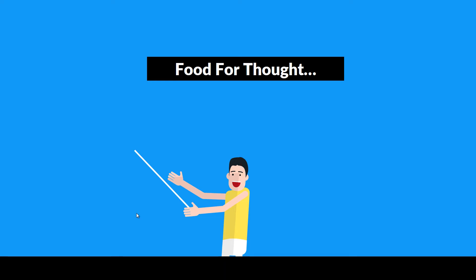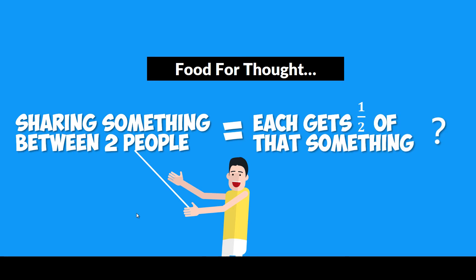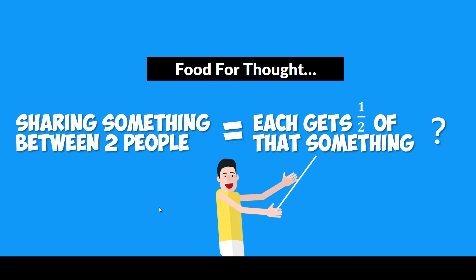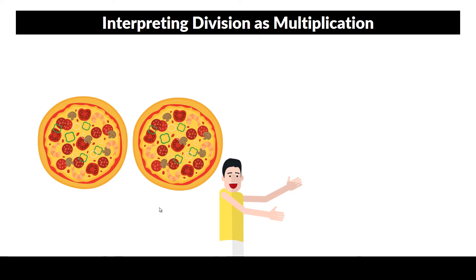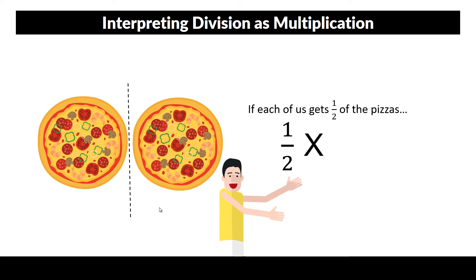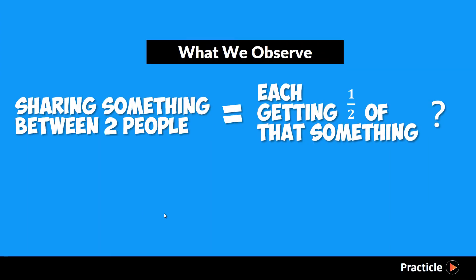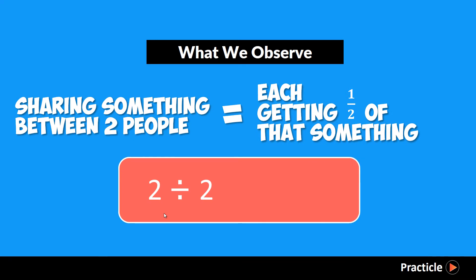Mr. R seems to think that sharing something between two people means that each of them will get half of the amount. Let's try to work this out to see if it's true. Suppose each of us gets half of the pizzas. To find the number of pizzas each of us actually gets, we'll take half and multiply it by the number of pizzas we have, which is two. And we end up with one pizza each — exactly the same as before. This helps us discover something very useful: a division problem can also be seen as a multiplication problem, since it gives us the same answer. Let's hold on to this important discovery — it will come in handy very soon.